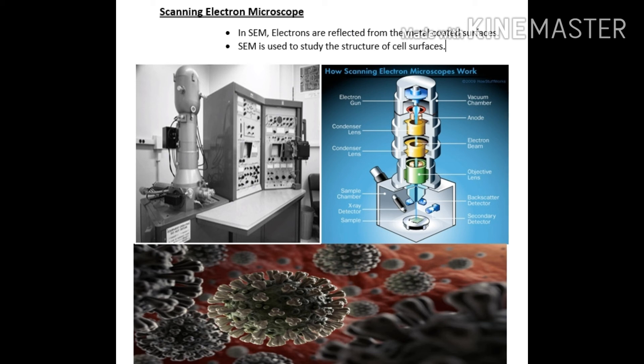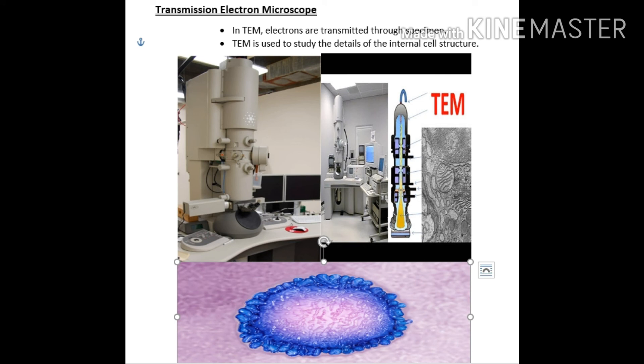Transmission Electron Microscope mein metal coated surface ko hata diya jata hai aur electrons specimen mein transmit ho jaate hain jis ko aap observe kar rahe hain, aur is ka internal structure bhi aap ko nazar aata hai — is ki anatomy ko aap discuss karte hain. Jaise COVID-19 ka virus — us ka internal structure bhi nazar aa raha hoga. Yeh Transmission Electron Microscope se possible hota hai. Is ki diagram aur function bhi aap ko screen par nazar aa raha hai.